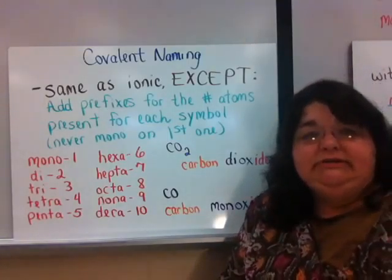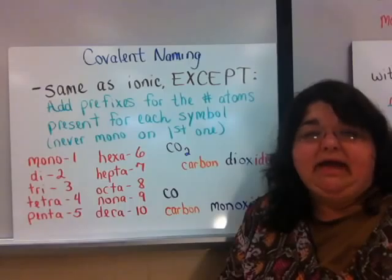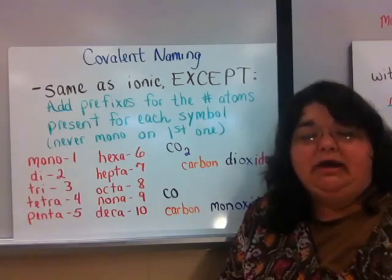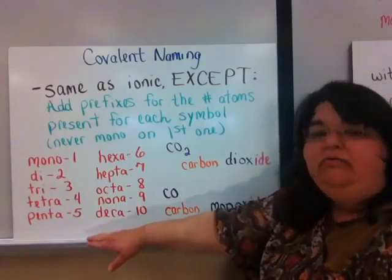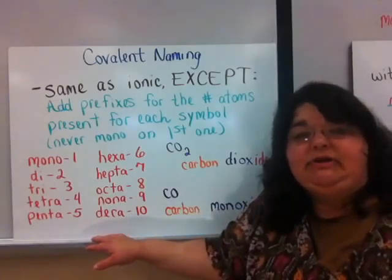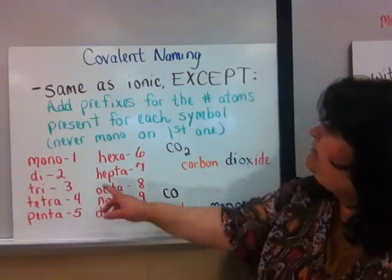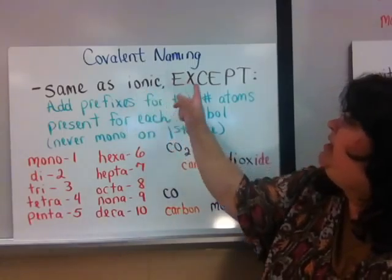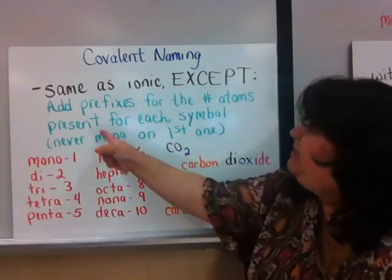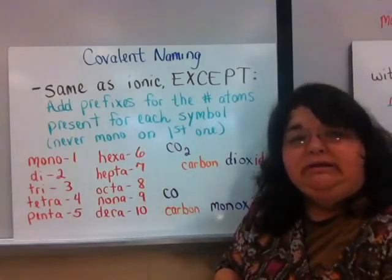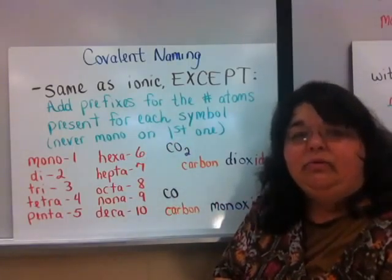All the previous examples — transition metals, polyatomic ions, and acids — were all part of ionic bonding. Now we're going to talk about covalent naming. Covalent, remember, is when electrons are shared. When naming a covalent bond, we follow the same rules as ionic bonding with one very important exception: we add prefixes for the number of atoms present for each symbol. The only time you will not add a prefix is if your first atom only has one — then you do not write 'mono.'